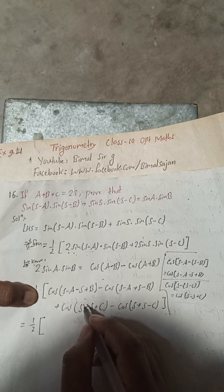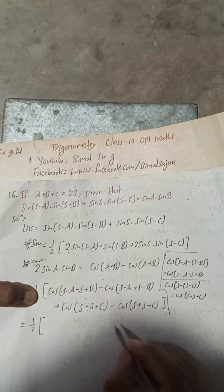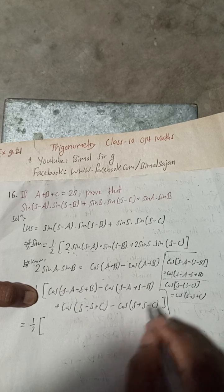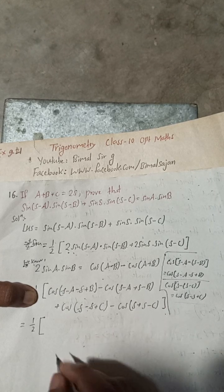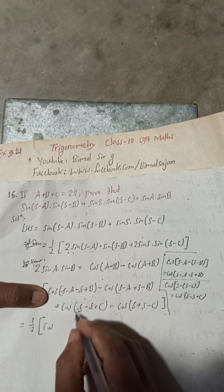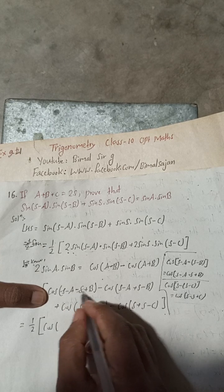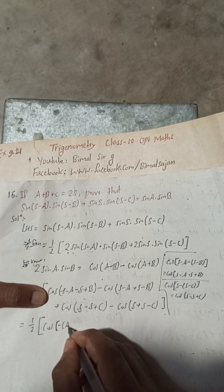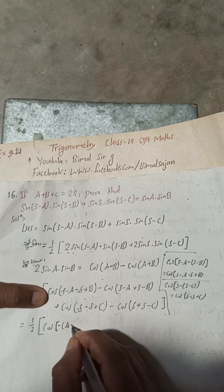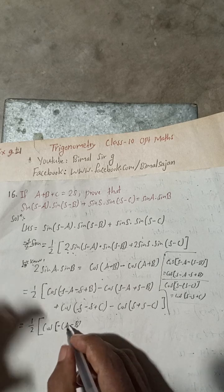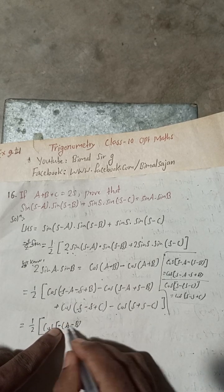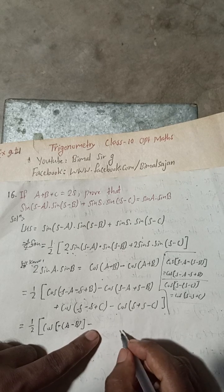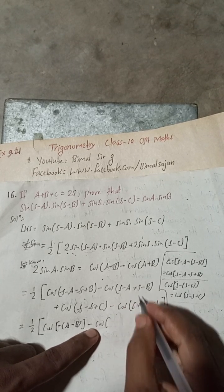Now simplifying: in the first group, s and s cancel, giving 2s, and then minus b−a simplifies. Taking minus as a common factor, this becomes minus(a − b). Here plus s and plus s give 2s.